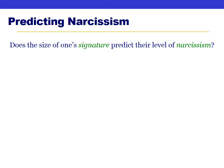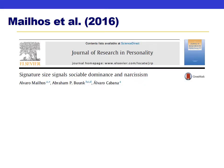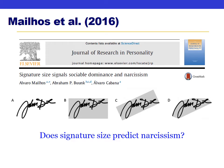Here's our first example: does the size of a person's signature predict how narcissistic they are? Researchers brought participants into the lab, had them sign a document naturally, coded how big the signature was, and had each person fill out a narcissism scale. They also hypothesized that the relationship between signature size and narcissism might be different for men and women — this is the interaction.